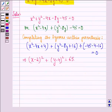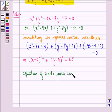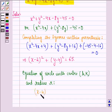Now we know that the equation of a circle with center (h, k) and radius r is given by x minus h the whole square plus y minus k the whole square equals to r square. Now on comparing these two equations...